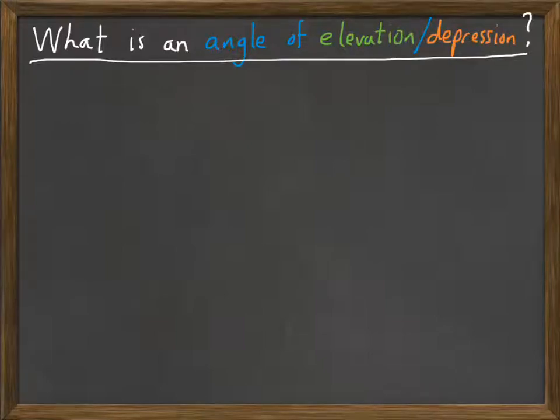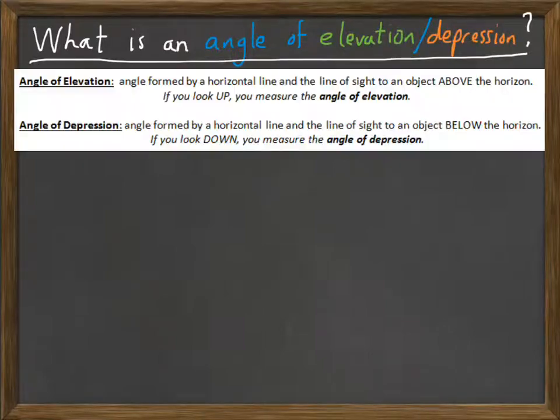So we obviously need to talk about what is an angle of elevation or an angle of depression. Let me give you the definitions, which you have on your page, and we'll walk through them, but then we'll draw a picture to help you understand it. An angle of elevation is the angle formed by a horizontal line and your line of sight to an object above the horizon, so you'd be looking up. This is the angle that you are looking up by, up from a horizontal line.